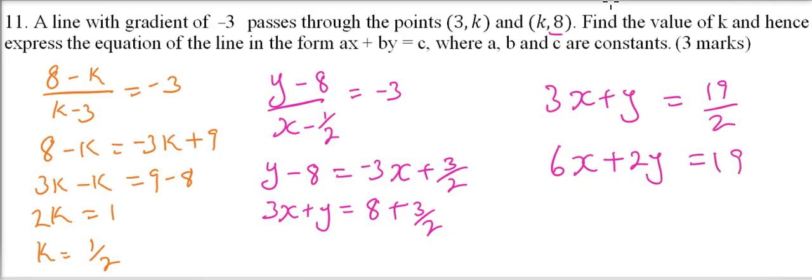Thus we have managed to express our equation in this format, where a = 6, b = 2, and c = 19. That's how you work it out and get yourself 3 marks.